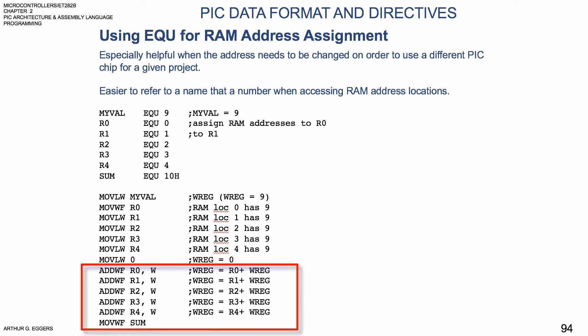We add R0 to the working register and then move the working register to the file sum. This demonstrates the ease of using the equate value to assign values to a RAM address, especially when you have lots of addresses that you want to hold the same value or a value that's been operated on from a previous arithmetic or logic function.